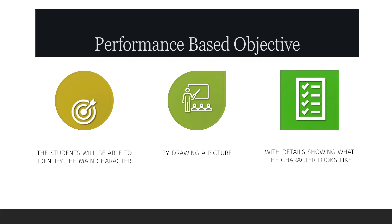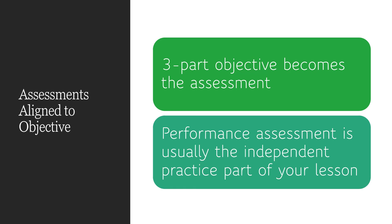Here's another example: 'Students will be able to identify the main character by drawing a picture,' and the criteria for success is that the details have to show what the character looks like. When you write these three-part objectives, they automatically become your formal assessment — the performance assessment is usually the independent practice part of your lesson. So writing these three-part objectives is wonderful because it automatically does your assessment for you.